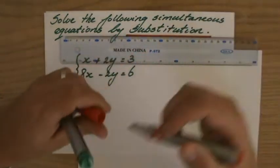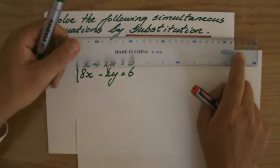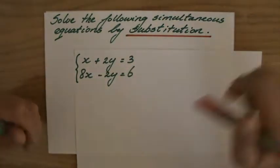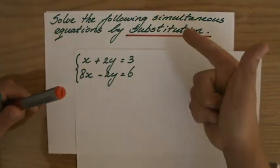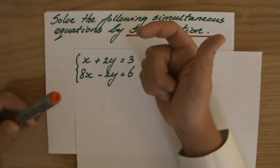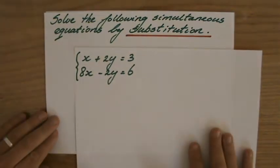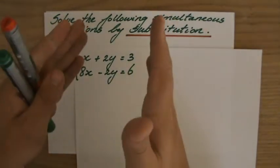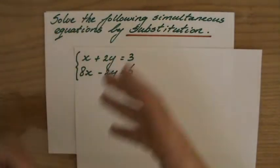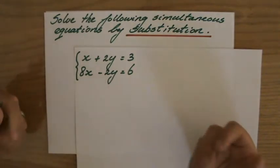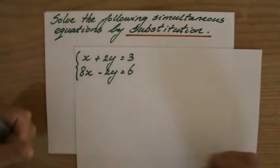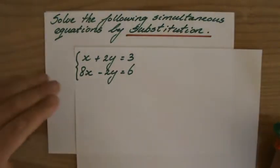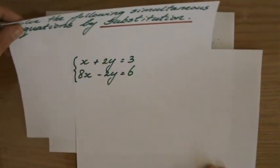We have several strategies to solve simultaneous equations - to solve two equations simultaneously at the same time. We have the elimination method, we have the substitution method, and we can also do it graphically. It's good to provide yourself with a few strategies instead of just focusing on one, because it's always good to have a bag full of tools which you can refer to then to solve the problem.